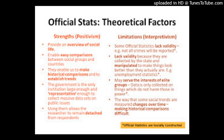Under what conditions do researchers apply one-way ANOVA? One-way analysis of variance, also known as simple analysis of variance, has only one independent variable and is used to compare two or more means from independent, unrelated groups using the F distribution. The null hypothesis is that the means are equal. One-way ANOVA partitions the total variability of the data into two sources: variability between groups (between-groups variance) and variability within each group (within-groups variance). F = between-group variance divided by within-group variance.